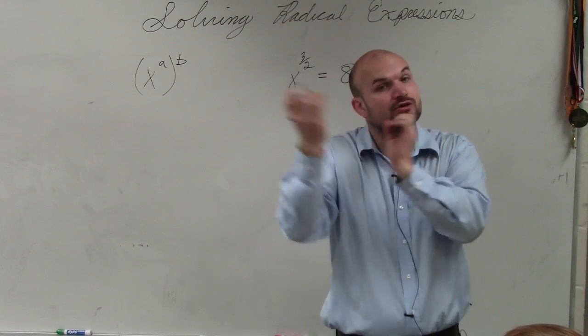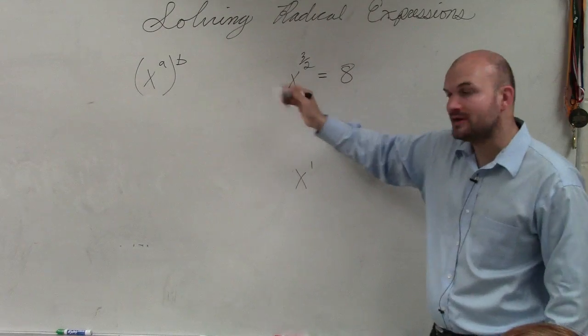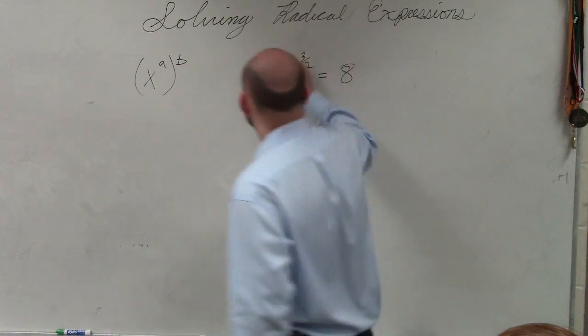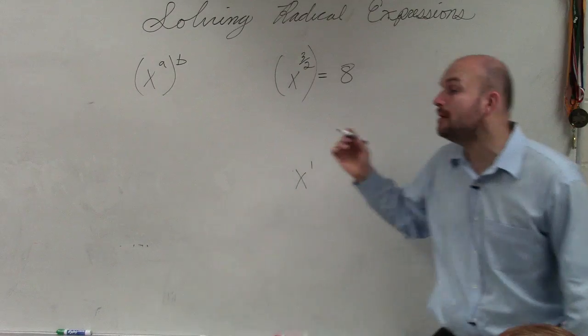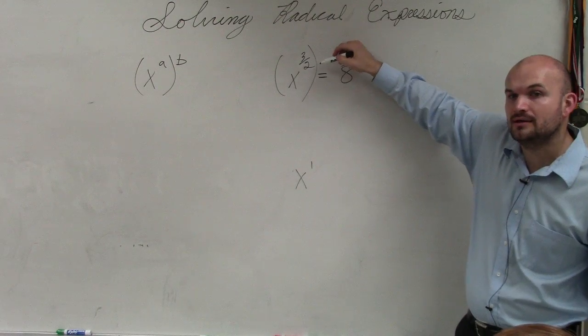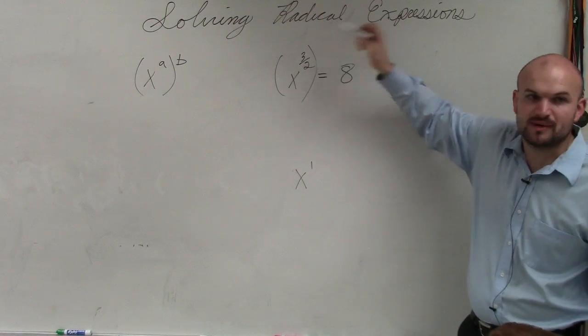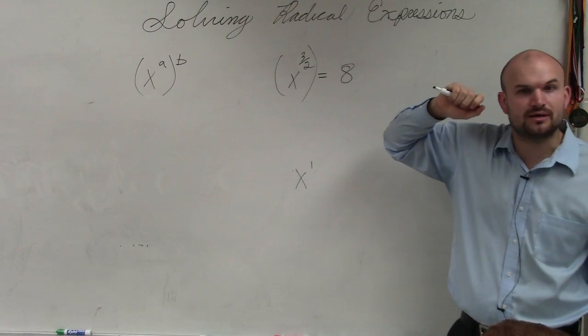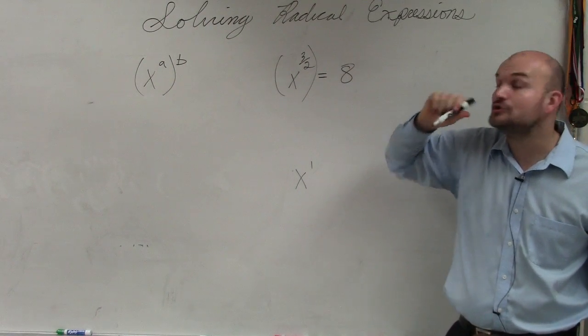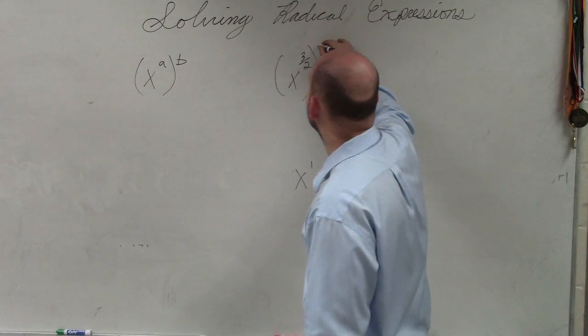Whenever you have an exponent raised to a power, you multiply the powers. So what I want to do is I want to raise my x to the 3 halves to a power that's going to make that 1. So what number multiplied by 3 halves is going to make that 1? 2 over 3, which is called the reciprocal.